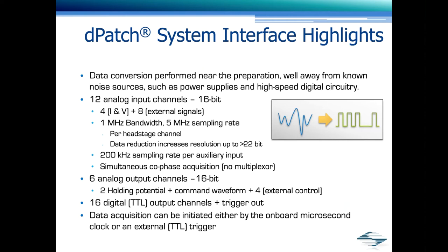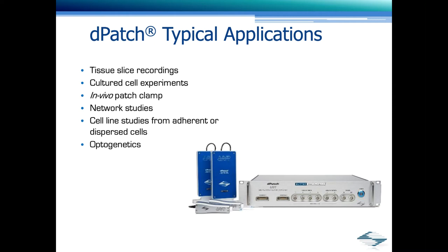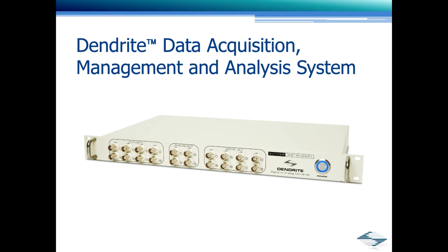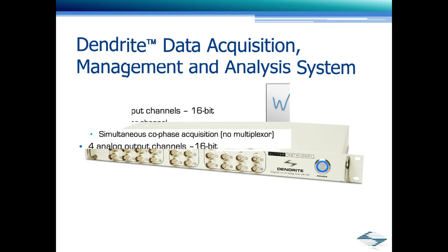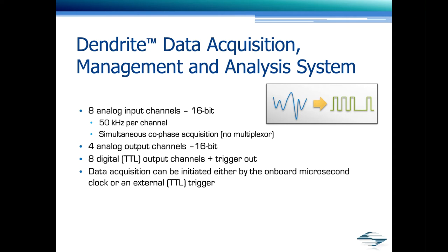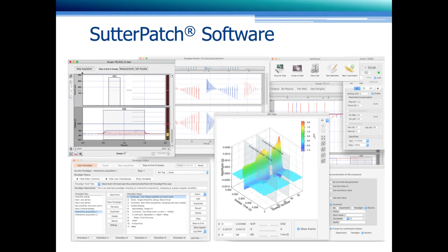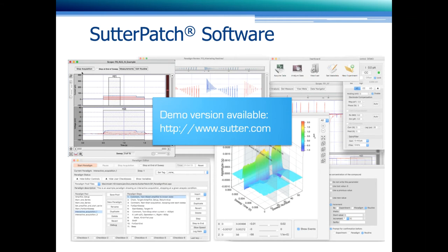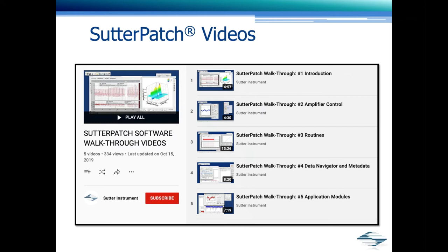Another important highlight is the bandwidth and sampling. Each DPatch head stage is capable of one megahertz bandwidth at five megahertz sampling rate. So the DPatch can do everything that the IPA can do, but it's very well suited for single channel recordings, recordings from nanopores, dynamic clamp experiments, and any application that requires high bandwidth. If you already have an amplifier available, then the Dendrite is your connection to Sutterpatch. The Dendrite is a standalone data acquisition interface that shares the same specifications as the IPA in terms of the interface section. Sutterpatch software is what drives all of our amplifier systems and the Dendrite. I'm not going to go into all the details of the feature set. You can get a demo version available on our website. We also have tons of walkthrough videos and tutorial videos available on our YouTube channel.